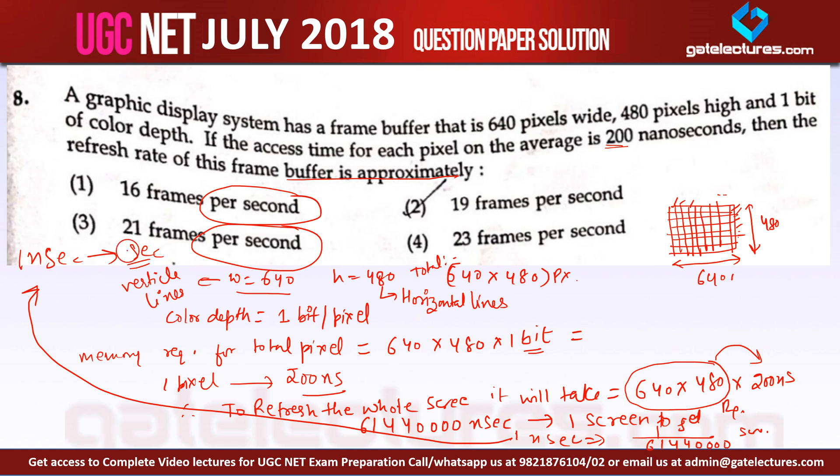Because we know in 1 second there are 10 raised to power 3 milliseconds, and in 1 second there are 10 raised to power 6 microseconds, and in 1 second there are 10 raised to power 9 nanoseconds. And we have to convert this nanosecond to second. That means we just have to multiply this value by 10 raised to power 9. Now if you evaluate this value, so this value comes out to be somewhere near 16.27 screens.